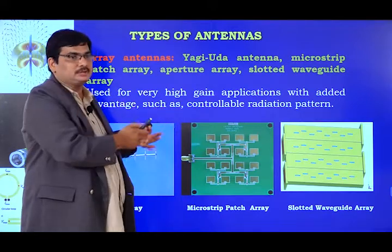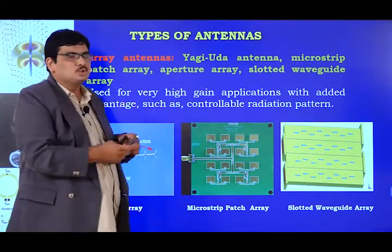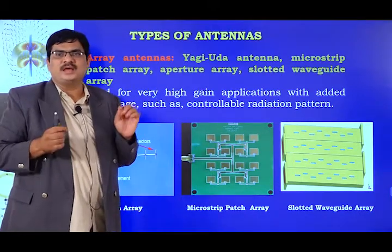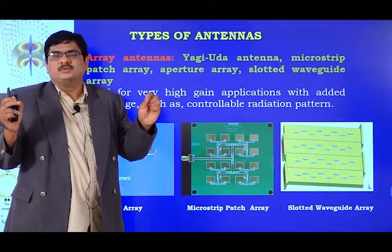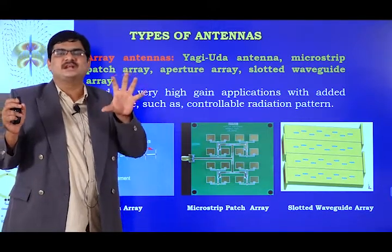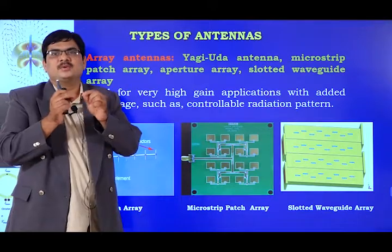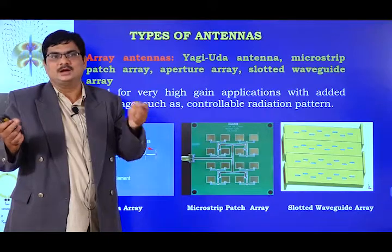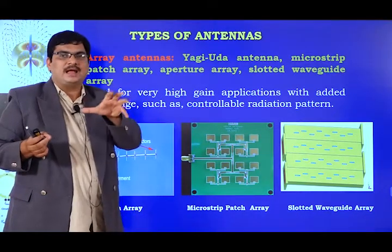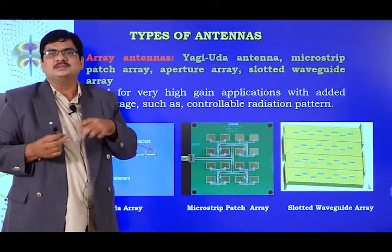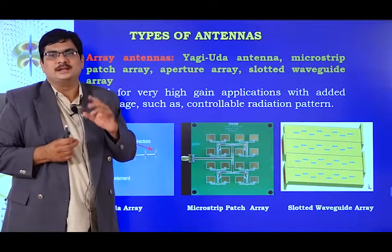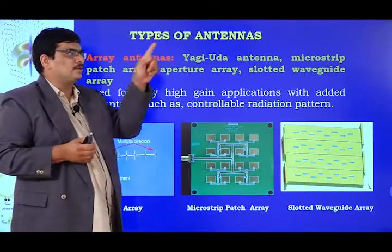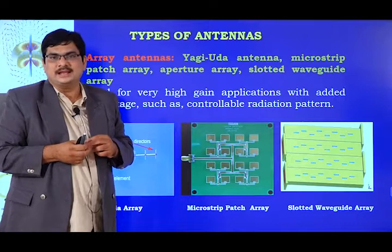To summarize the topics covered so far: we use different types of antennas. Wire antennas use a simple wire in different orientations. A single wire acts as a linear wire antenna. If you form the wire into a loop or circle, it acts as a loop antenna. If the wire is wound into a coil structure, it acts as a helical antenna.